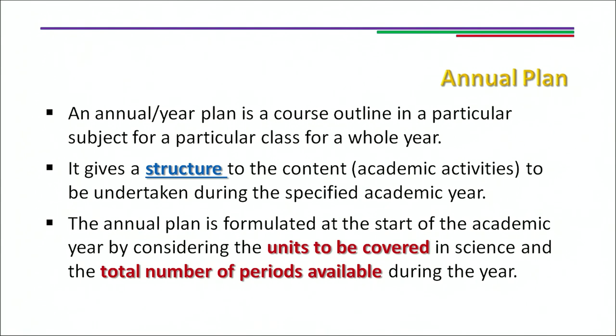An annual or year plan is a course outline in a particular subject for a particular class for a whole year. So if we are in the year 2018, you will have the annual plan for 2018 to 2019. It gives a structure to the content — the academic activities to be undertaken during the specified academic year.